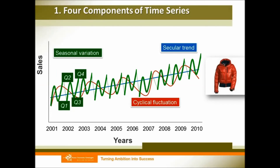Sometimes our sales are difficult to predict because there are irregular, unexpected things that happen. We call this irregular variation. For example, an earthquake or September the 11th — these are unexpected events that also influence our sales.